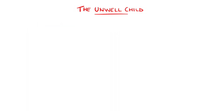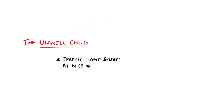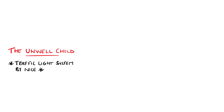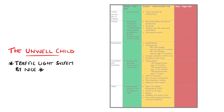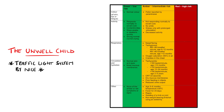Spotting the sick child can be difficult as some findings are subtle. NICE have provided a traffic light system to help identify serious illness, especially in those under the age of 5 years. It is divided into colour, activity, respiratory, circulation, and other — therefore somewhat modelling the A to E approach.